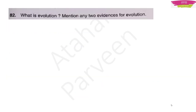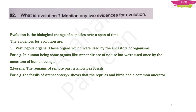Question 82: What is evolution? Mention two evidences. Evolution is the biological change of species over a span of time. Two evidences are: vestigial organs (organs once used by ancestors, e.g., appendix in humans) and fossils (remains of organisms from the remote past, such as Archaeopteryx fossils showing reptiles and birds had a common ancestor).